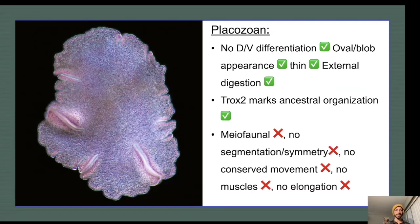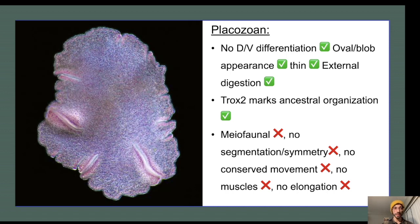Placozoans are tiny — about a thousand cells — and they lack visible dorsal-ventral differentiation. They have a blob-like oval-shaped appearance and are very thin. They create an external digestion chamber underneath their ventral side and absorb nutrients through their skin. All of these characteristics match very cleanly with Dickinsonia's. In addition, genetic sequencing of placozoans showed that they express a single Hox gene, Trox-2. Expression of Hox genes is crucial for body patterning and organization, and Trox-2 expression in modern placozoans suggests that ancestral placozoans may have been far more complex, losing many Hox genes through miniaturization over the years.